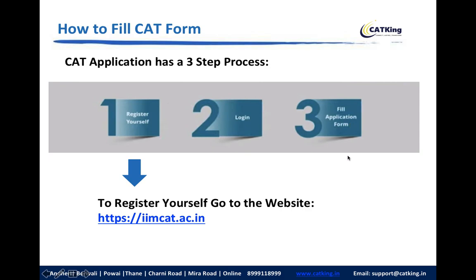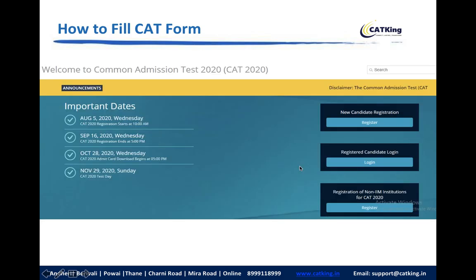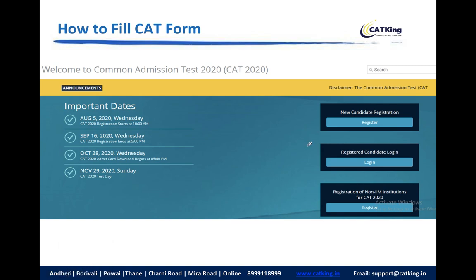Log in to your application form. The application form is very big, long, and easy to make mistakes on. This is your website. The New Candidate Registration Form is on the right-hand side. If you can see it, you will have New Candidate Registration Form, Registered Candidate Login, and Non-IIM Institution options.